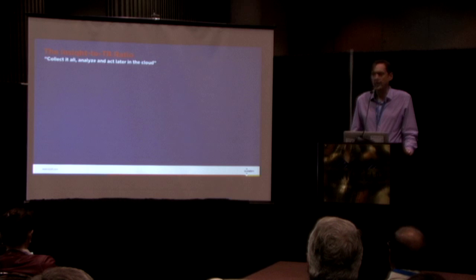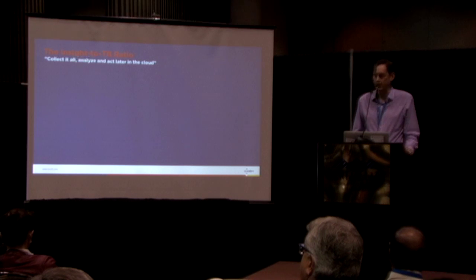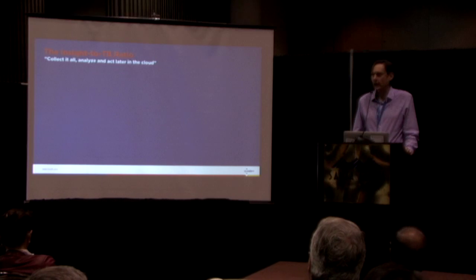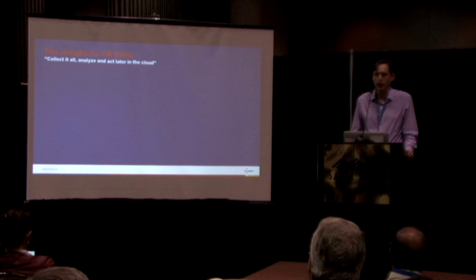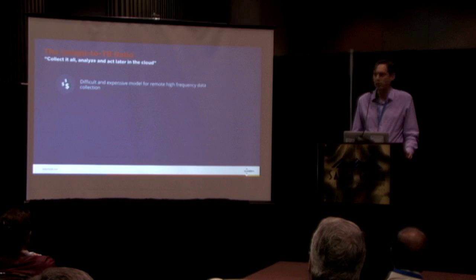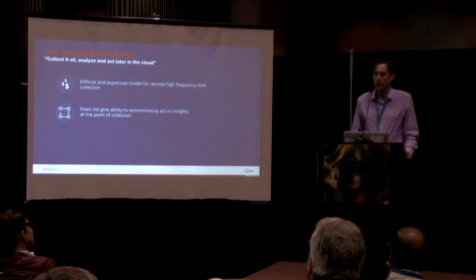We have a thing we talk about called the insight-to-terabyte ratio — that's about what's the volume of insights I'm getting for how much I'm storing. The prevailing wisdom is that you just collect it all and then analyze and act later in the cloud. There's a lot of talk about how much data is coming off devices — the Boeing 787 and so on — terabytes of data. We think this is difficult and expensive for certain communication models such as cellular, especially when dealing with high-frequency data. And importantly, what you don't get is the ability to act autonomously on the data at the edge. You can't act on the data because you're relying on the cloud to process, ingest, and run some rules.